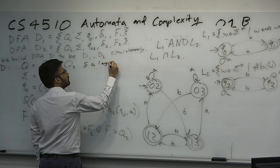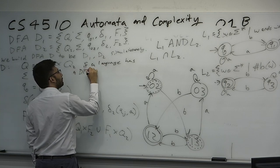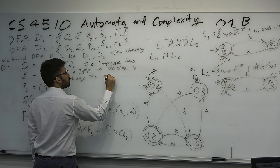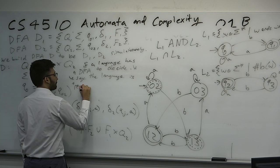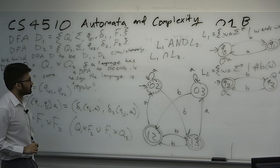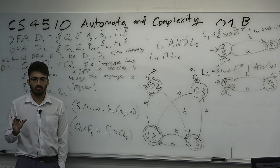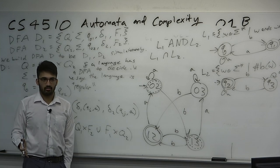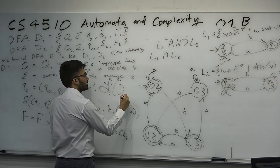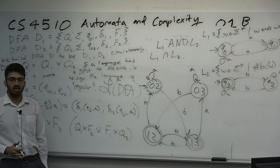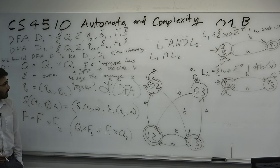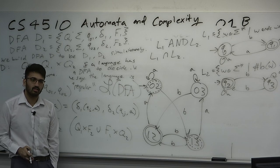I'll leave you with one definition. If a language has a DFA to decide it, we say the language is regular. This is bidirectional — if and only if. Every regular language has a DFA. If you see 'let L be a regular language,' you can immediately say there exists a DFA for it. We represent the class of regular languages with the fancy notation LDFA — it's a set of languages, each of which has a DFA.